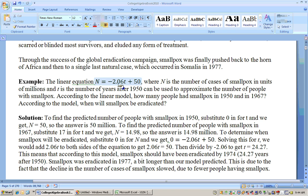If we want to use this model to predict when smallpox would be eradicated, it means that nobody in the world has smallpox. So we'll put 0 in for N. If we put 0 in for N, we have 0 equals negative 2.06 T plus 50. Then solving this equation, I would take the negative 2.06 to the other side. That would change the sign. I get 2.06 T equals 50. Or you can think of it as adding 2.06 T to both sides.